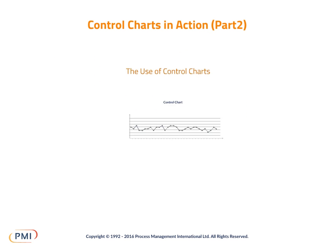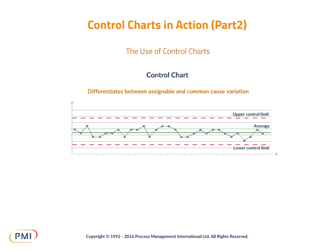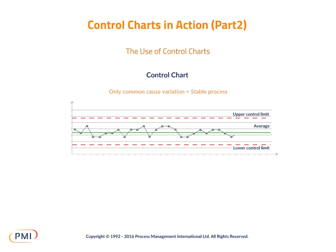Control charts enable you to distinguish between the two types of variation. Control charts have a central line representing the average value, and lines representing upper and lower control limits. When data points fall within these limits, only common cause variation is present, and the process can be said to be stable and predictable.